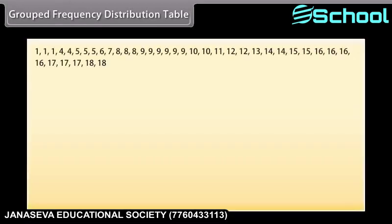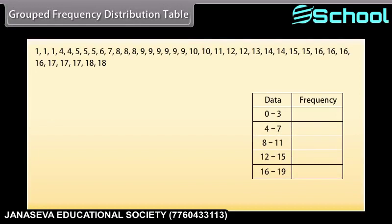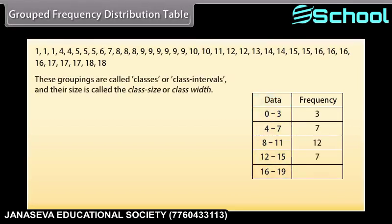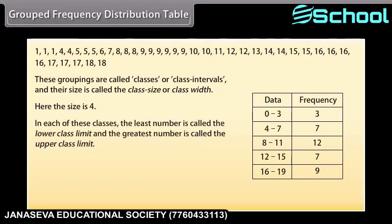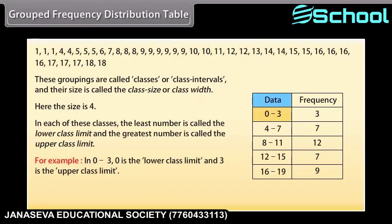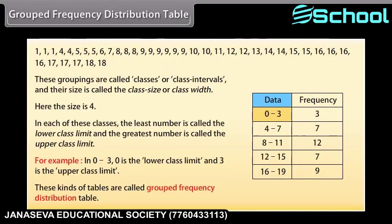Sometimes we have a large amount of data, so to present it we condense it into groups like 0 to 3, 4 to 7, and so on till 16 to 19, since our data is from 1 to 18. These groupings are called classes or class intervals, and their size is called class size or class width — here the size is 4. In each class, the least number is called the lower class limit and the greatest number is called the upper class limit. For example, in 0 to 3, 0 is the lower class limit and 3 is the upper class limit. These kinds of tables are called grouped frequency distribution tables.